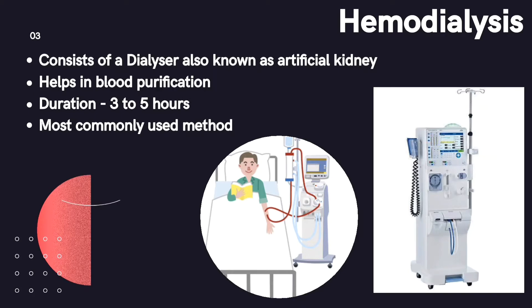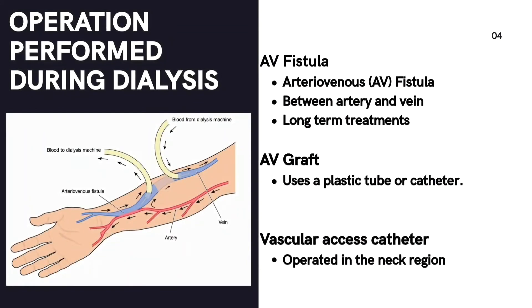Patients must undergo hemodialysis in hospitals and dialysis centers. There are specific operating procedures performed during dialysis. The major one is the arteriovenous fistula, or AV fistula, which is a surgical connection made between the artery and vein, most commonly preferred for long-term treatments. Impure blood is removed from the surgical site through a catheter and purified blood is returned. Another type is the AV graft, where a plastic tube connects vessels if blood flow is insufficient. A vascular access catheter can also be inserted into a large vein in the neck.